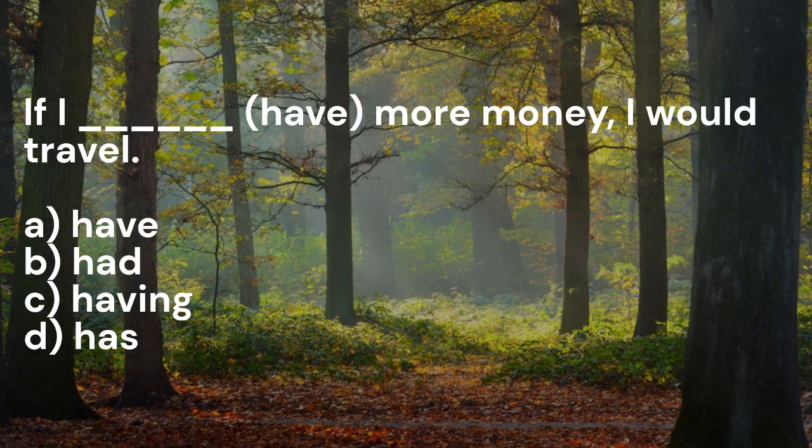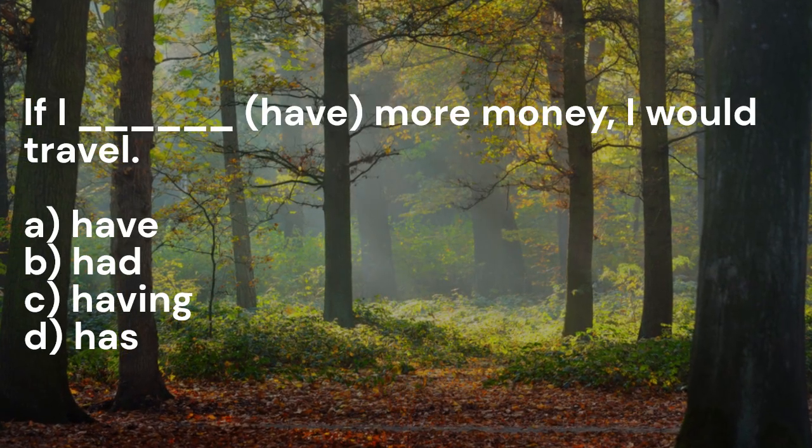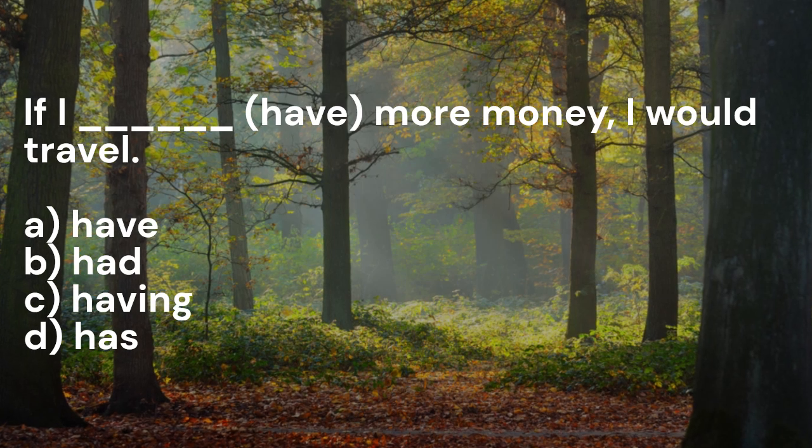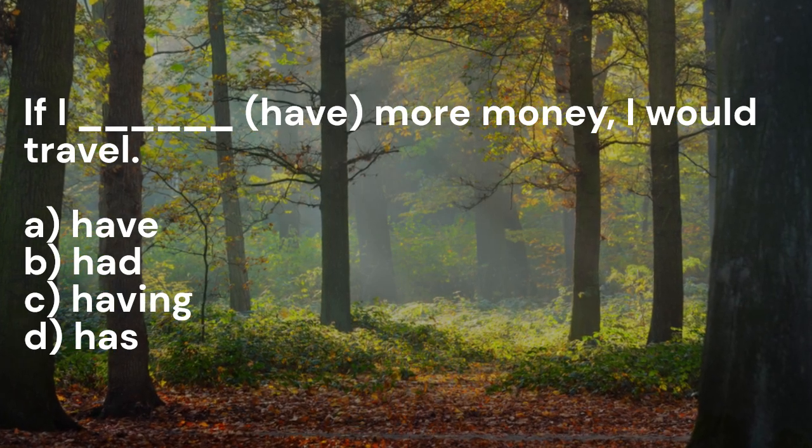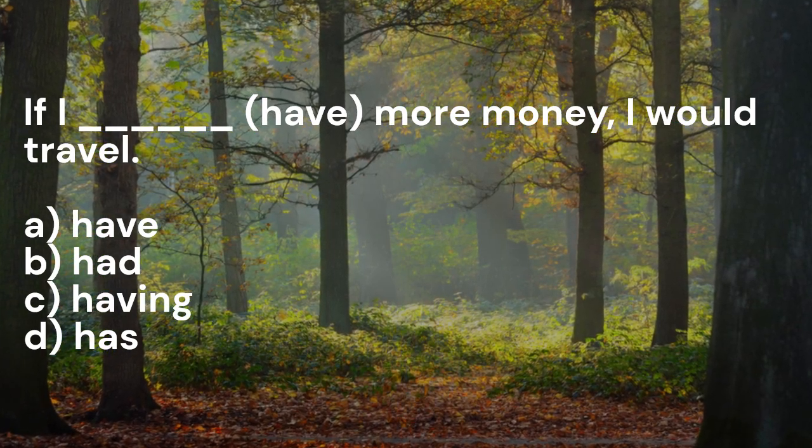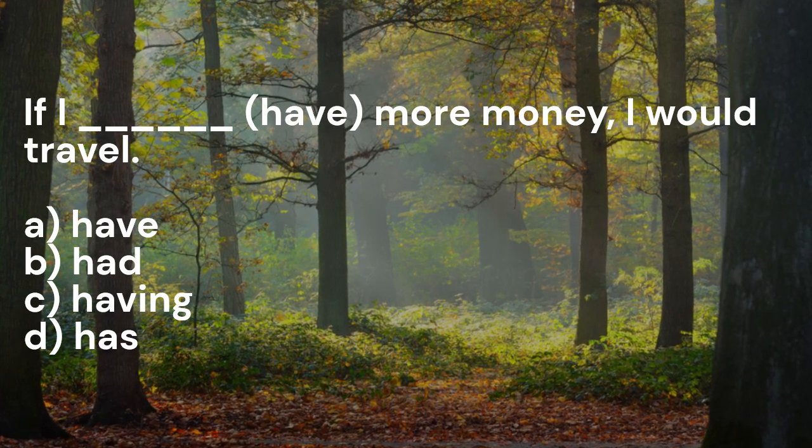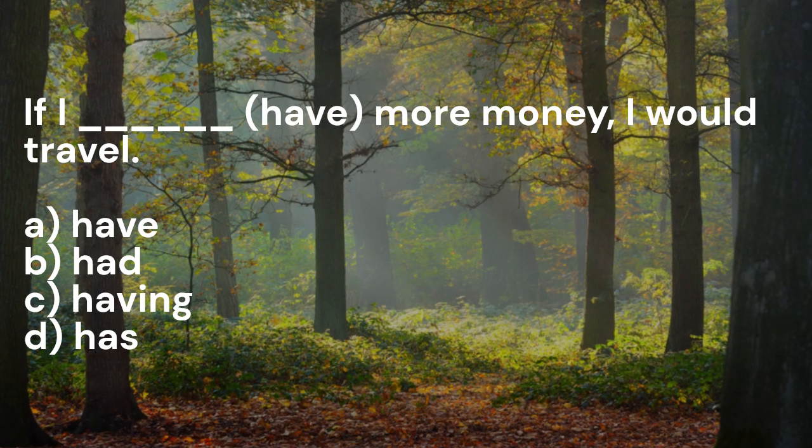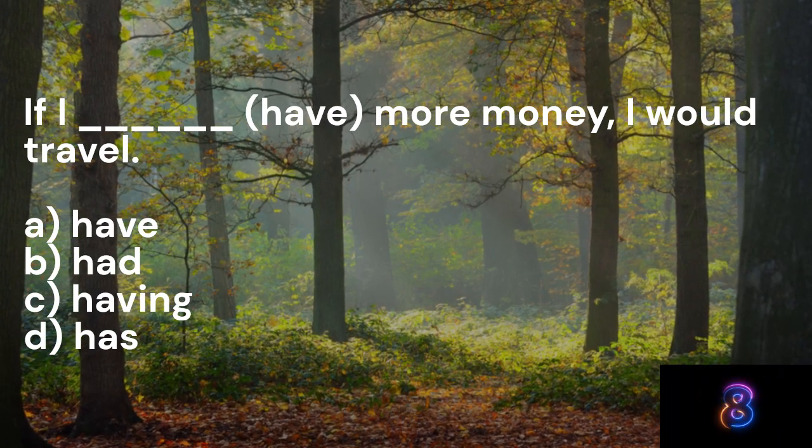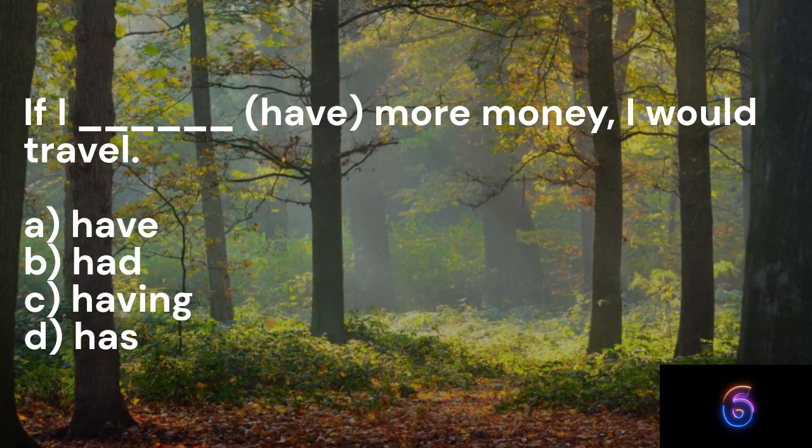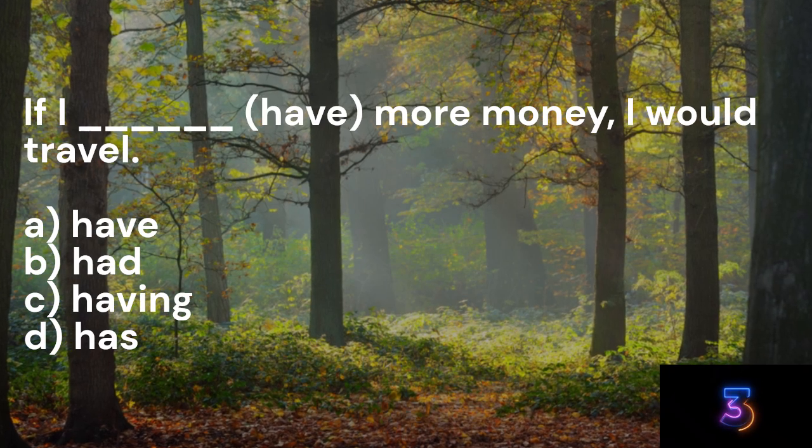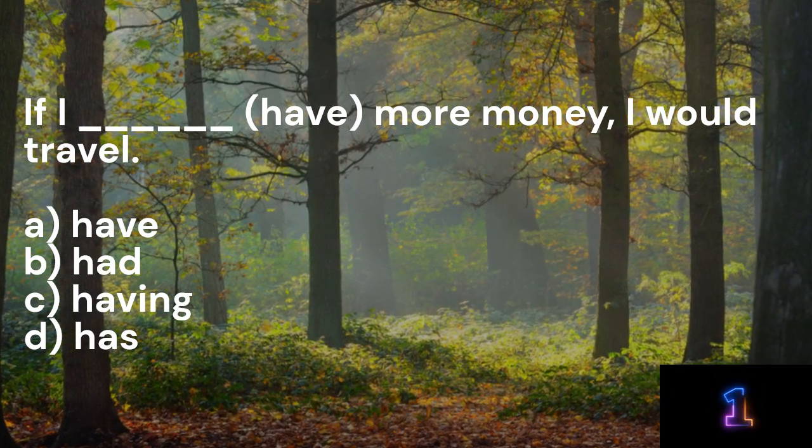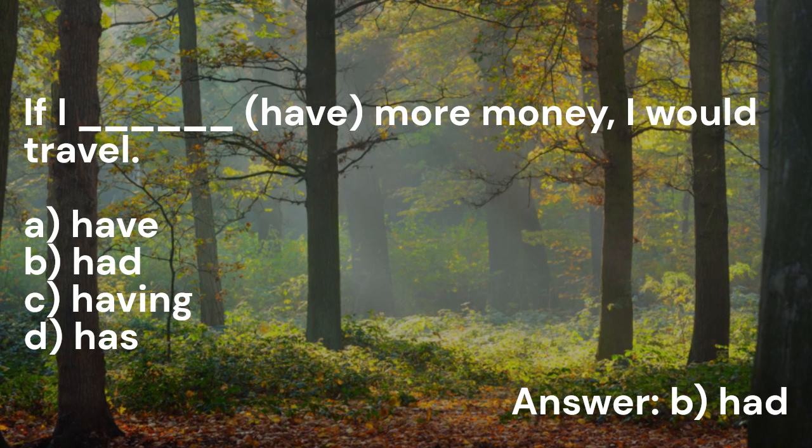If I underscore have more money I would travel. A: Have, B: Had, C: Having, D: Has. Answer B: Had.